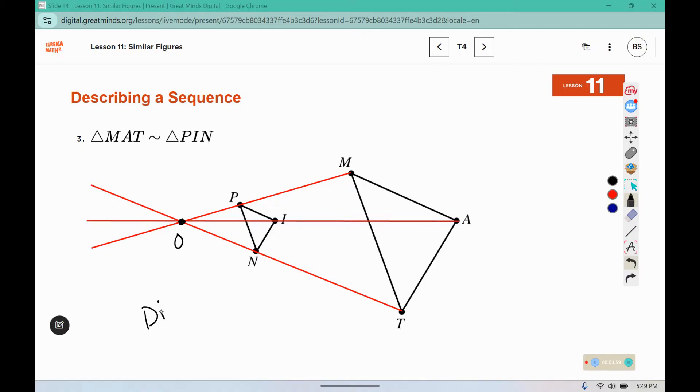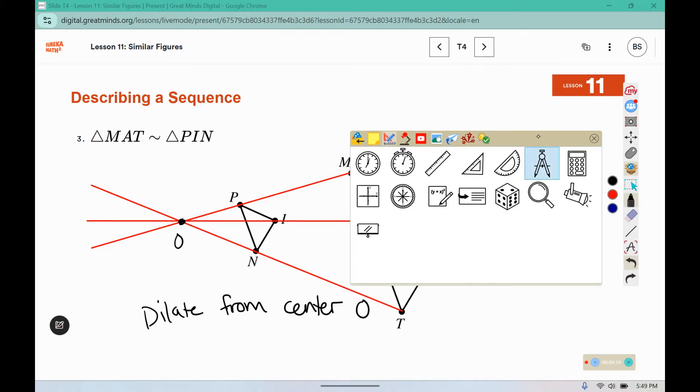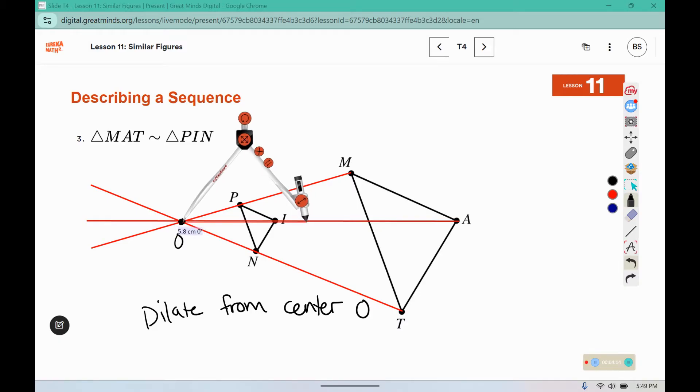So we said dilate from center O and then we have to figure out what the scale factor was. So we pulled out our compass and from here to P, that would be a dilation of one, two, and almost three. Here's one, two, and right around three.